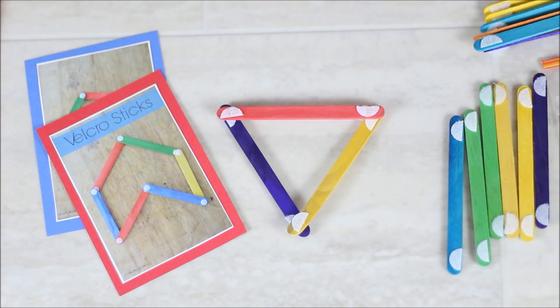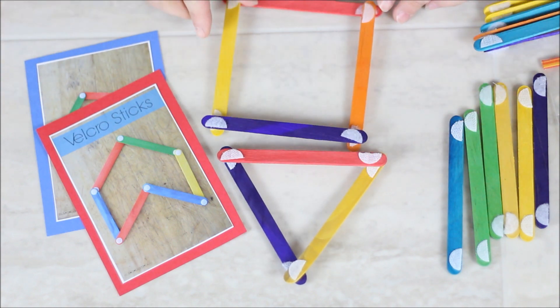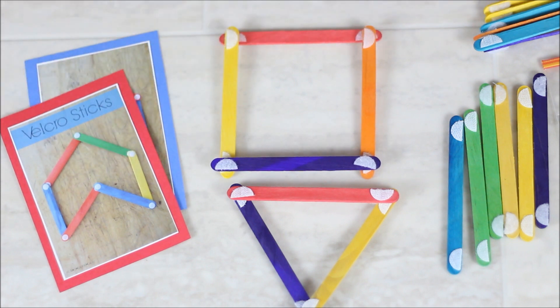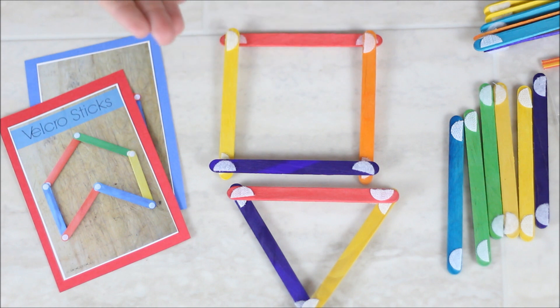They can put them together and stick them into shapes like this. Or, for example, here's a square. You can discuss different colors of the popsicle sticks, so maybe you can ask them to build a square out of only yellow popsicle sticks. There's a lot of different ways where you can incorporate teachable moments into this busy bag.